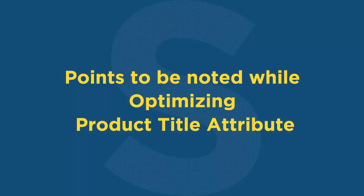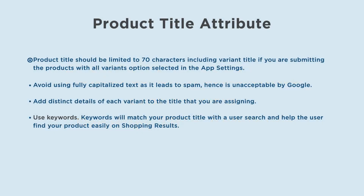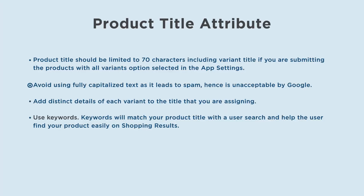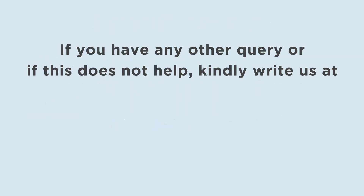Points to be noted while optimizing the product title attribute: product title should be limited to 70 characters including variant title if you are submitting products with the all-variants option selected. Avoid using fully capitalized text, as it leads to spam and is unacceptable by Google. Add distinct details of each variant to the title. Use keywords — they will match your product title with a user search and help the user find your product easily in shopping results.